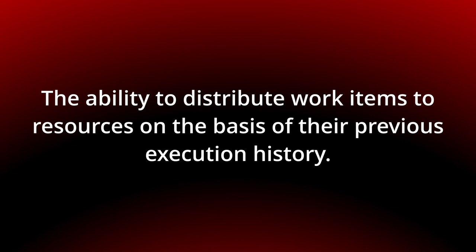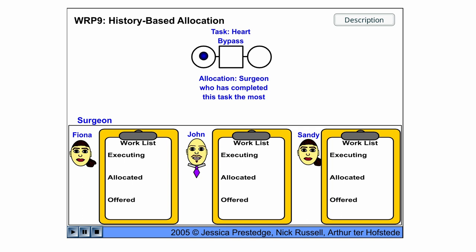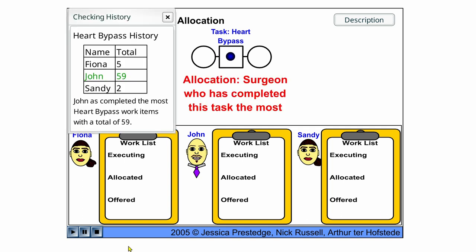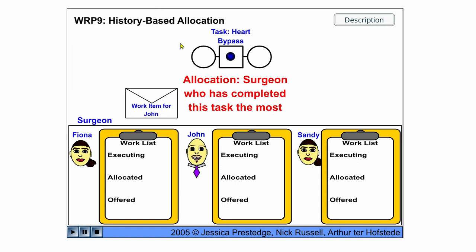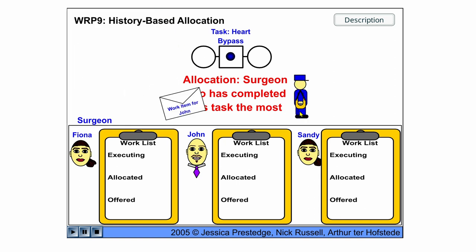You can see the behavior in the following flash animation. Here we have three surgeons: Fiona, John, and Sandy. We start the case and now this heart bypass work item is allocated to the one who has completed most of these tasks, and we can see that John has most of them.